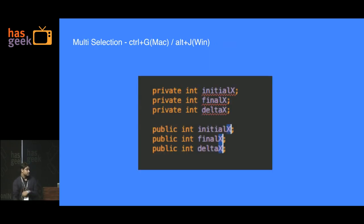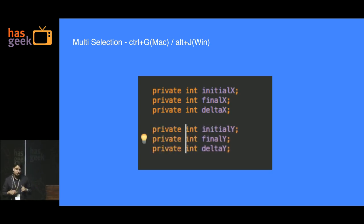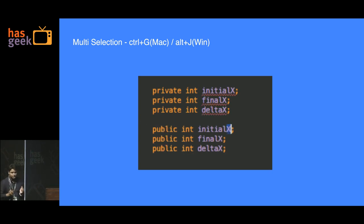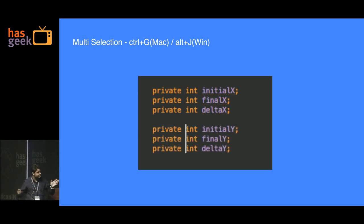Multi-selection — if any of you have used Sublime Text, this is that feature which allows you to select all variables with the same name and rename them in one go. So you have a variable x, you want to rename it to y — just change one place and everywhere else it gets updated automatically.